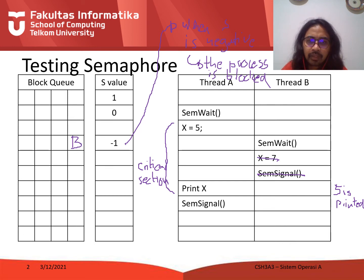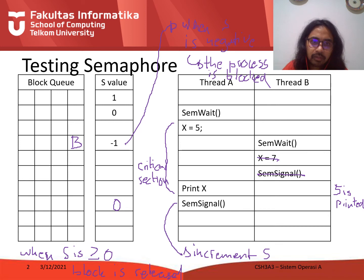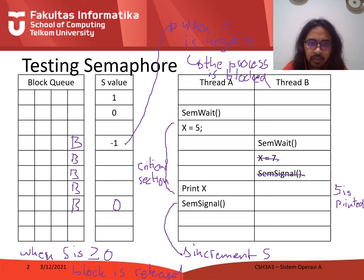The minus 1 value is incremented — s is incremented. So minus 1 becomes 0. When s is 0 or positive, the block is released. Thread B has been inside the block queue, and when send signal is called, B is released from the block queue.